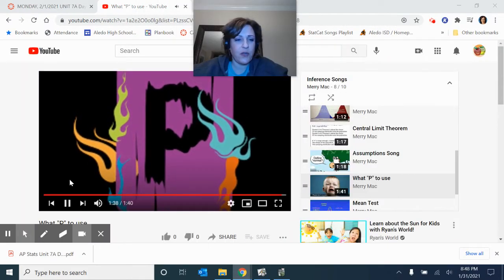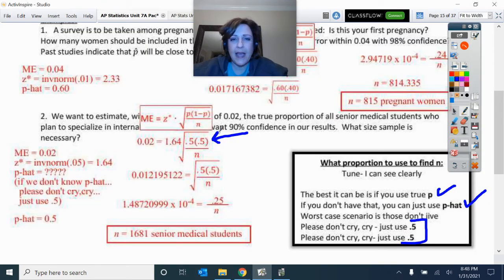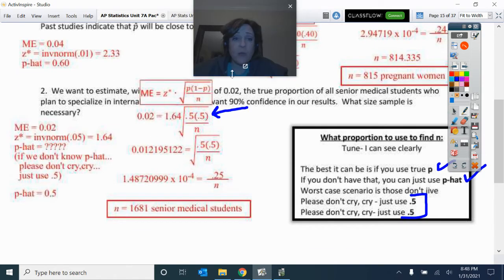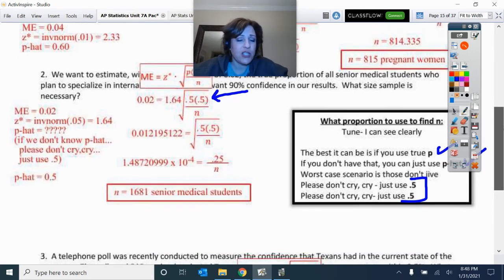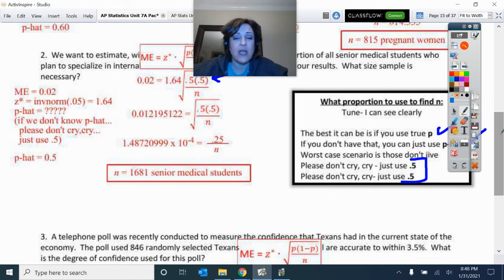All right, so there you have that. If you do not have P hat, then you can use 0.5 to be on the safe side. So that's what we put in there. 0.5 filled in the margin of error equals that critical value. Used 0.5 and solved that out and then rounded it up. So try this number 3, see how you do on that. I'm going to let you take a moment, pause, and try that number 3, and we'll see how you do.